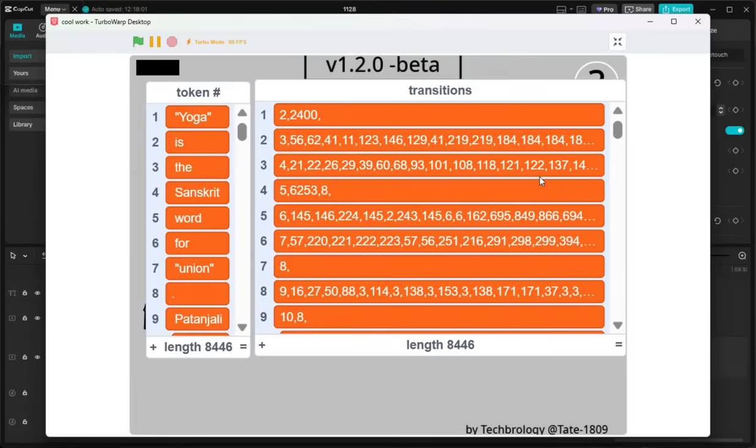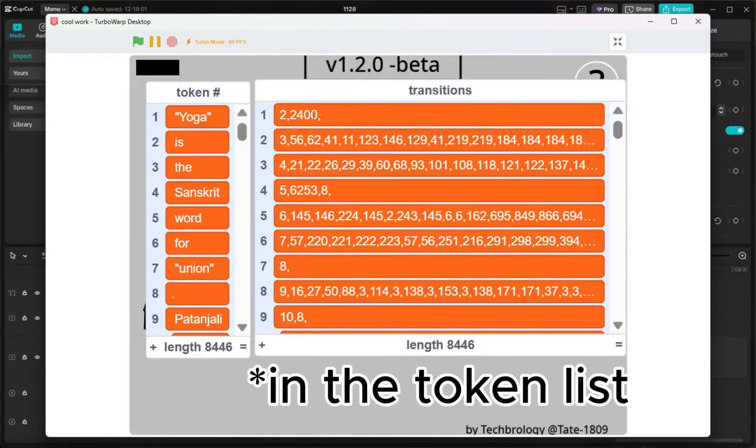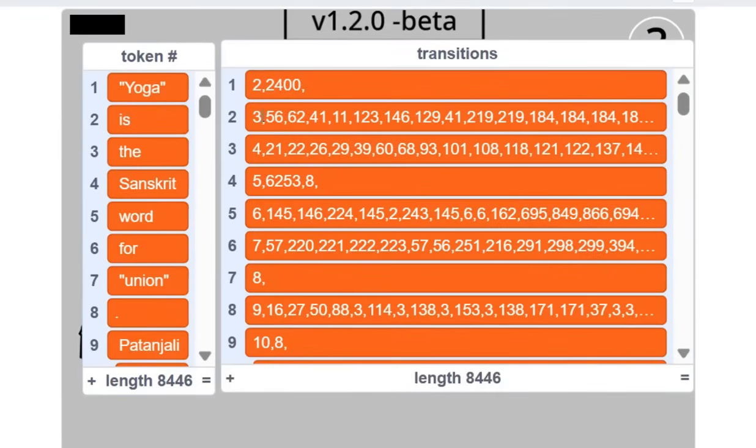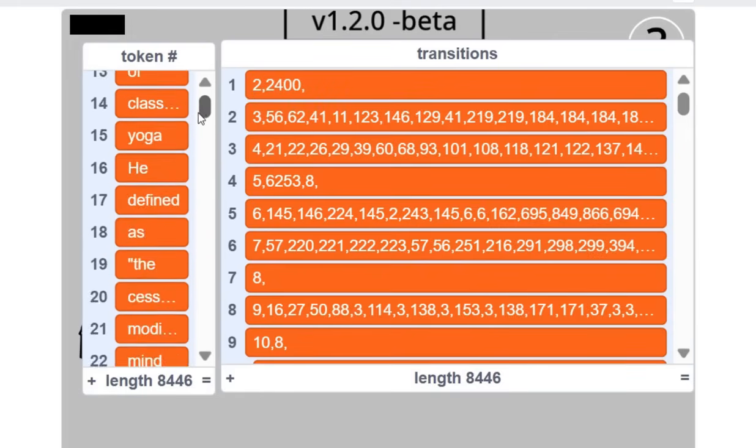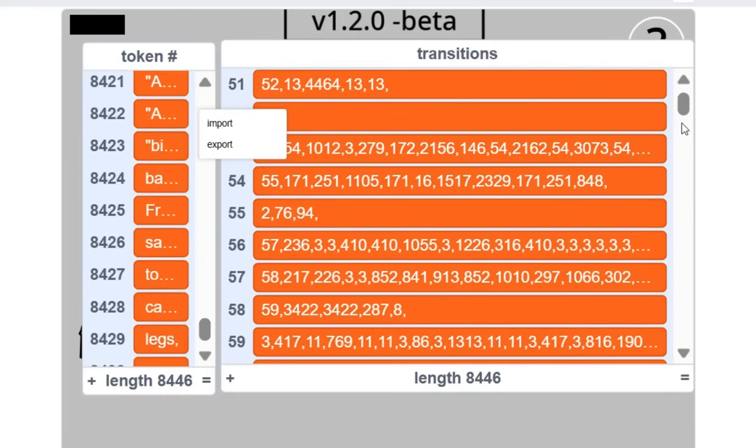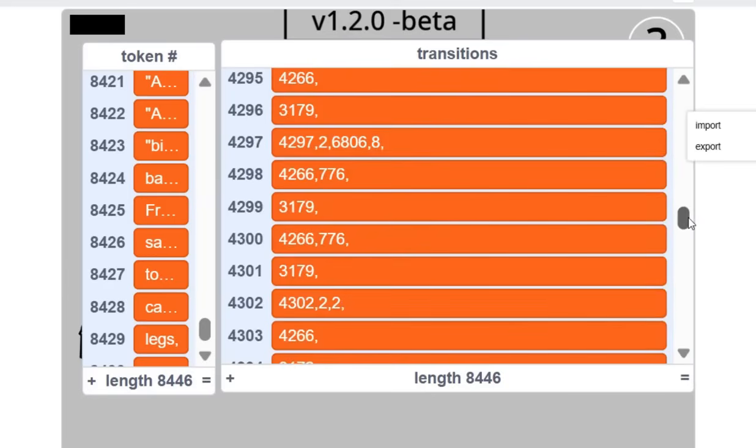So the list will look something like this. So here's the token list. Here's the transition list or the training list. So the word yoga, all the words that come after yoga are number two in the list and number 2400. And then all the words that come after is are number three in the list, number 56, number 62, number 41, etc. So then it does it for every single token. So we have 8,000 tokens, and then we have 8,000 transitions.